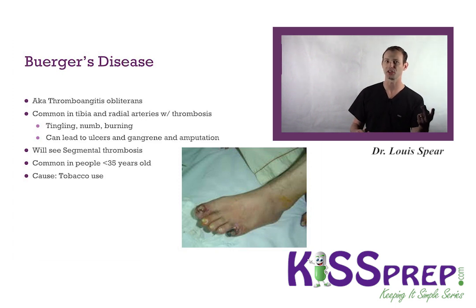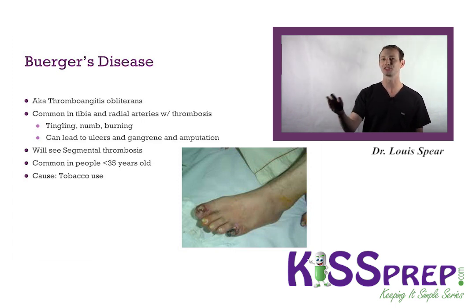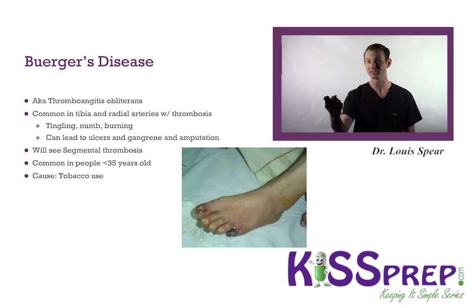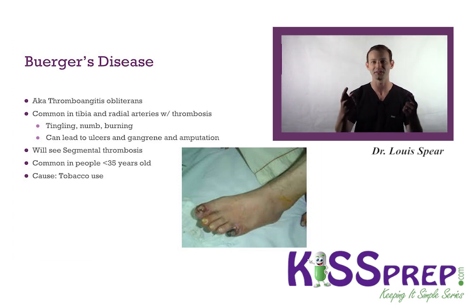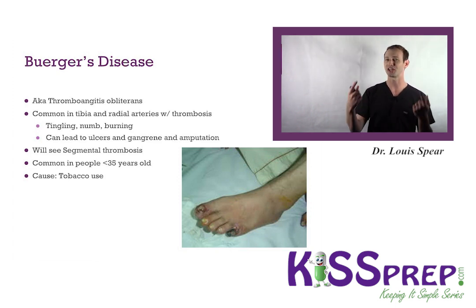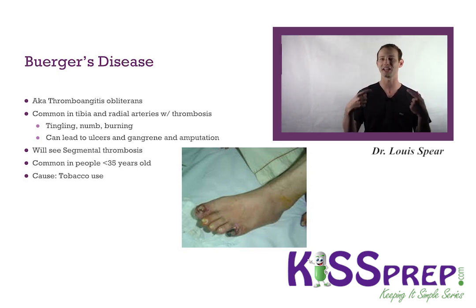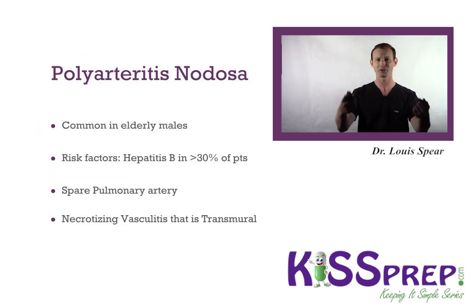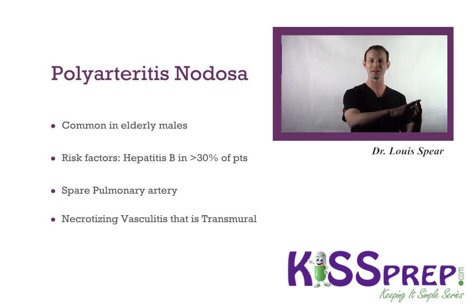Buerger's Disease, also known as Thromboangiitis Obliterans, is common in the tibial and radial arteries. You'll see thrombosis leading to tingling, numbness, burning sensations, and potentially ulceration or gangrene. The hallmark under the microscope is segmental thrombosis. This is common in smokers — tobacco users, typically less than 35 years old but with at least 10 years of tobacco use.